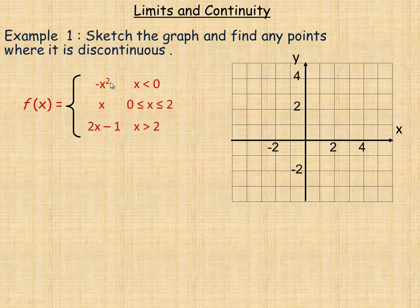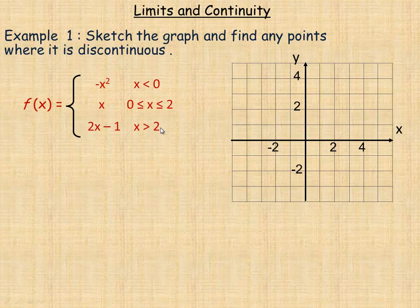This is a piecewise function because it has three different parts. The function equals negative x squared where x is less than zero; f of x equals x between zero and two inclusive; and the function equals 2x minus one for x values larger than two. I'm going to start with the simplest part to graph: f of x equals x.